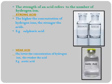The strength of an acid refers to the number of hydrogen ions. Strong acid: the higher the concentration of hydrogen ions, the stronger the acid. The lower the concentration of hydrogen ions, the weaker the acid — like acetic acid. Hydrogen ions show the strength of the acid. Sulfuric acid has a very high free hydrogen ion concentration, so it is a stronger acid. Hydrochloric acid is similar. Weak acids like acetic acid have a lower free hydrogen ion concentration — that is why they are called weak acids.